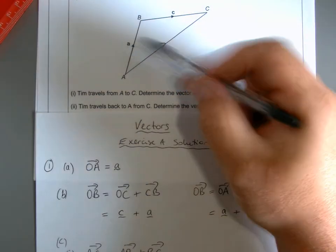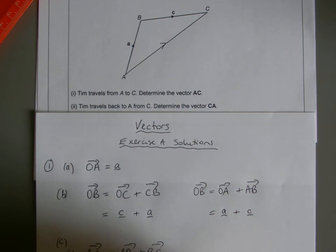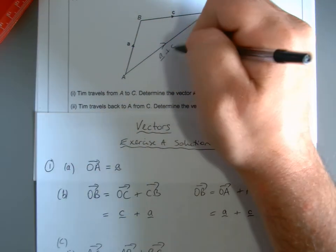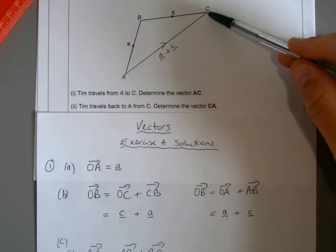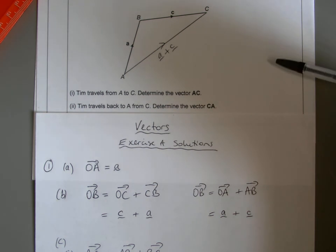A to B is little a, and B to C is little c. So that would be the approach. I can even write it in if you want. To get from A to C, the displacement is going along a and then along c. That's the summation there.